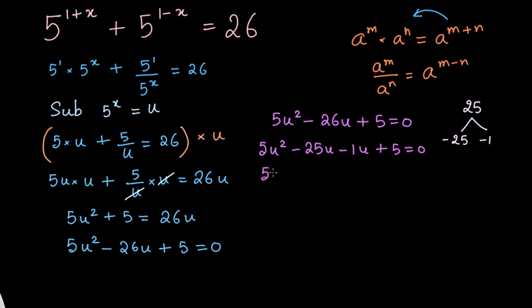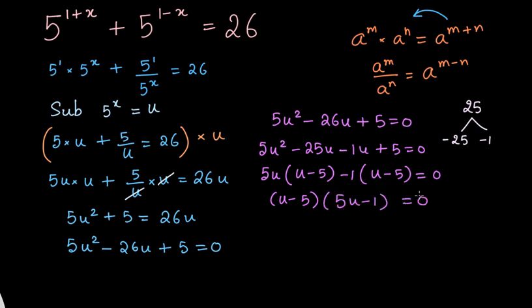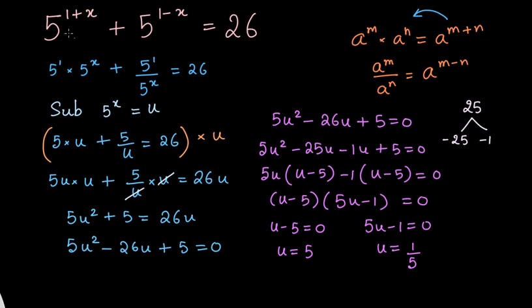Taking 5u as a common factor from the first two terms gives u minus 5, and taking minus 1 common from the last two terms also gives u minus 5. So we have (u minus 5)(5u minus 1) equals 0. This means either u minus 5 equals 0, giving u equals 5, or 5u minus 1 equals 0, giving u equals 1 by 5. So we have two possible values of u: 5 and 1/5.